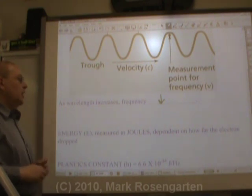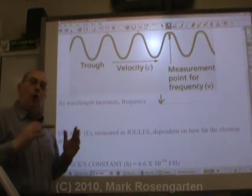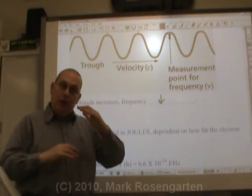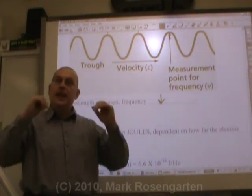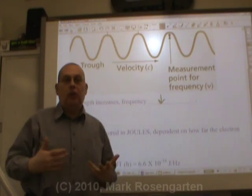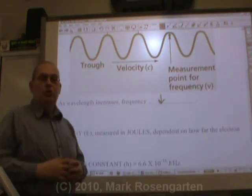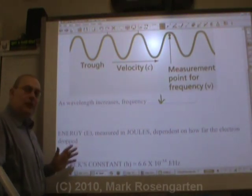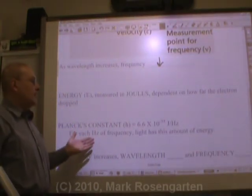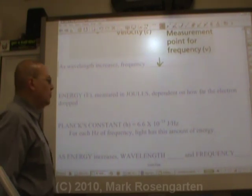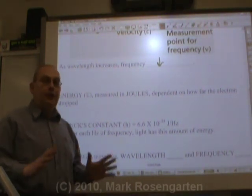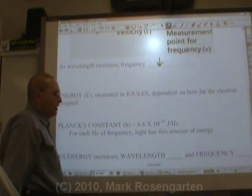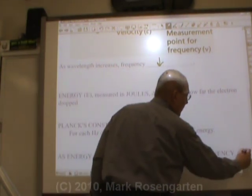The other factor you're dealing with is energy, measured in joules. All light has energy, because electrons are in energy levels above the nucleus. When energy is given to an electron, it rises in energy level. When it falls back down, it loses all of that energy — measured in joules — and that's the same amount of energy the emitted light has. You can relate energy to frequency using Planck's constant: 6.6 times 10 to the negative 34th joules per hertz, meaning that's how many joules the light has for every hertz of frequency. So as energy increases, wavelength decreases and frequency increases.